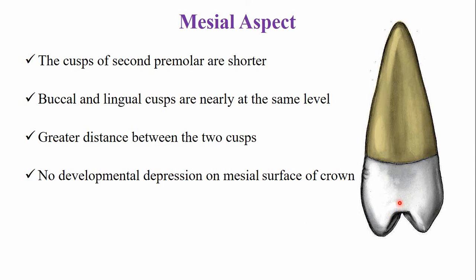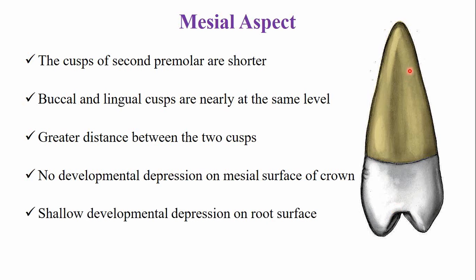In the first premolar, there is a developmental groove on the marginal ridge called the mesial marginal developmental groove. In the second premolar, the mesial marginal ridge is smooth with no developmental depression on the crown surface — only a shallow developmental depression is present on the root surface.